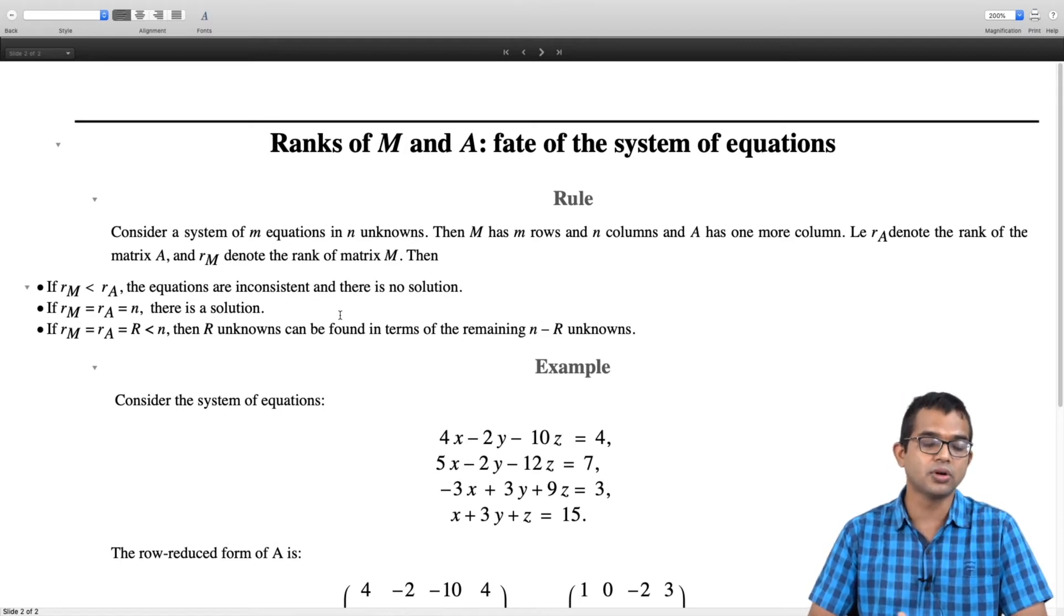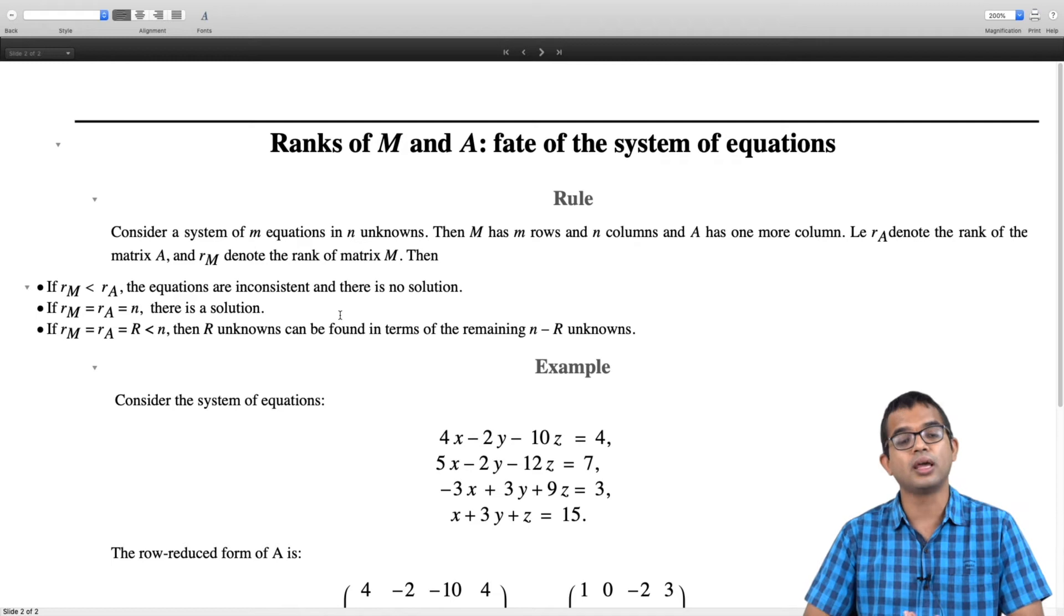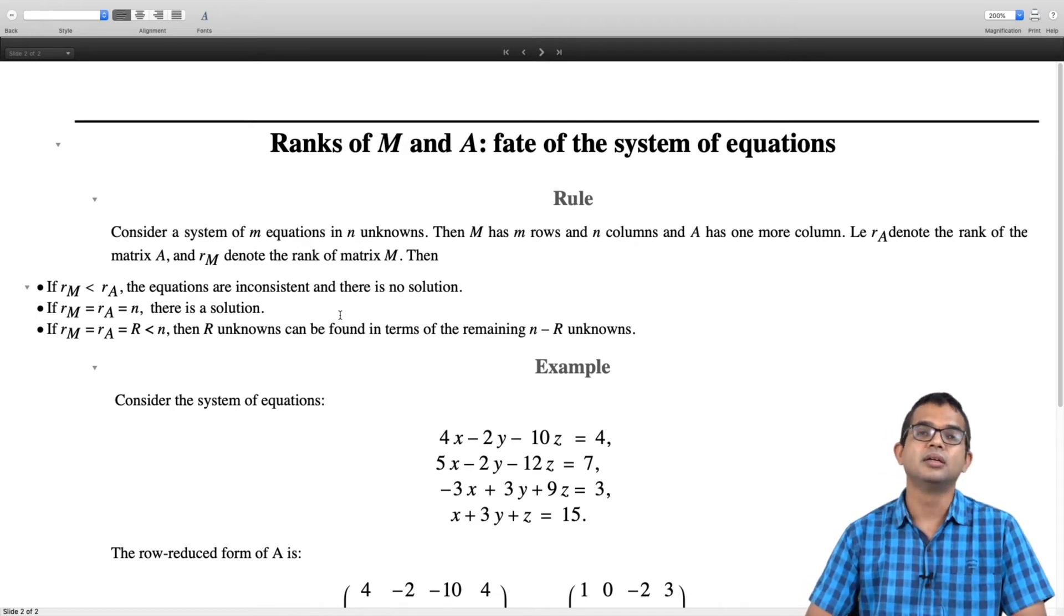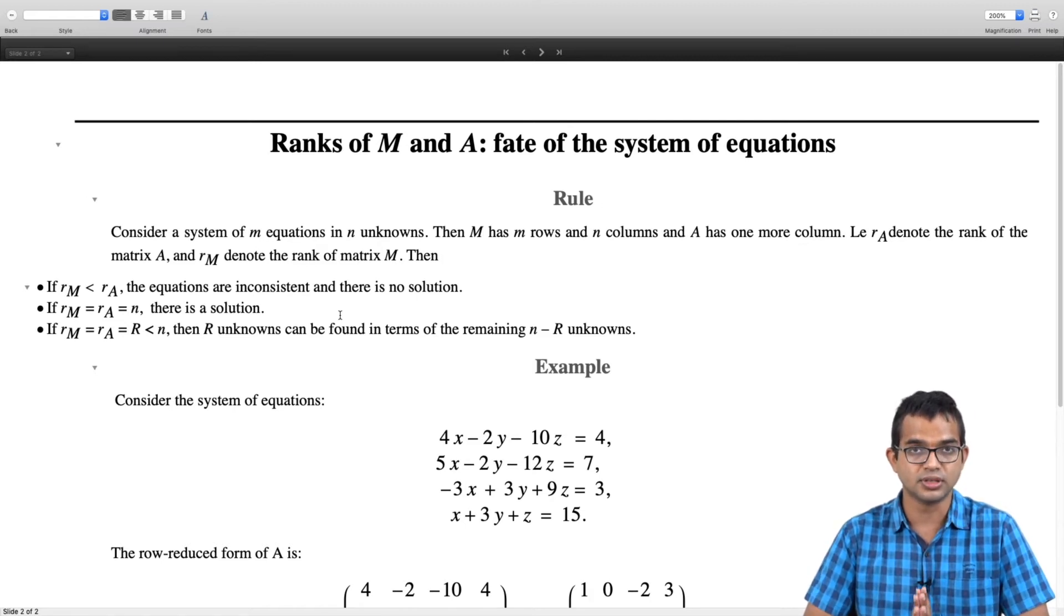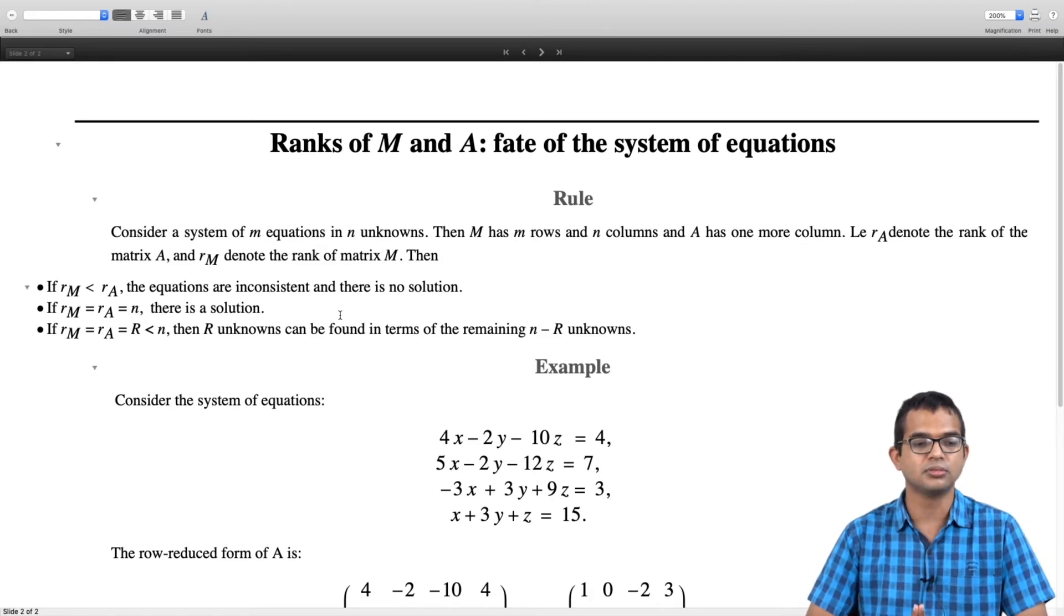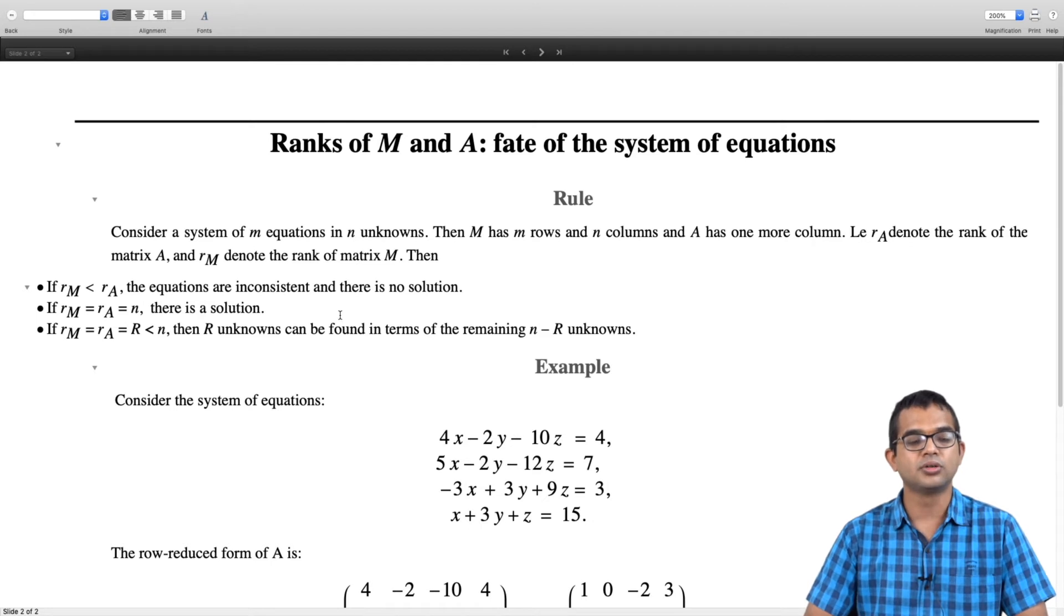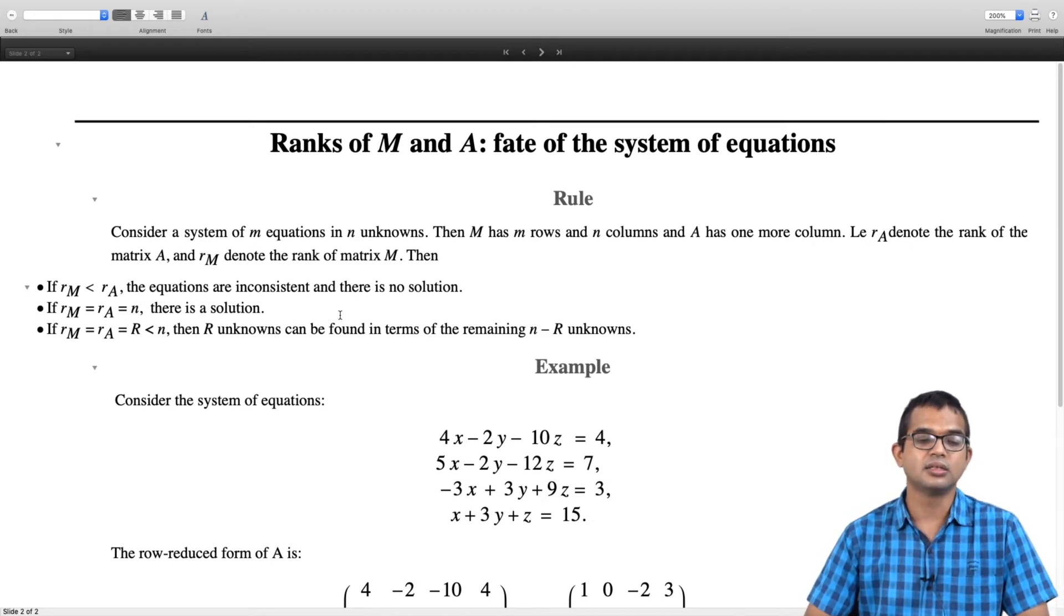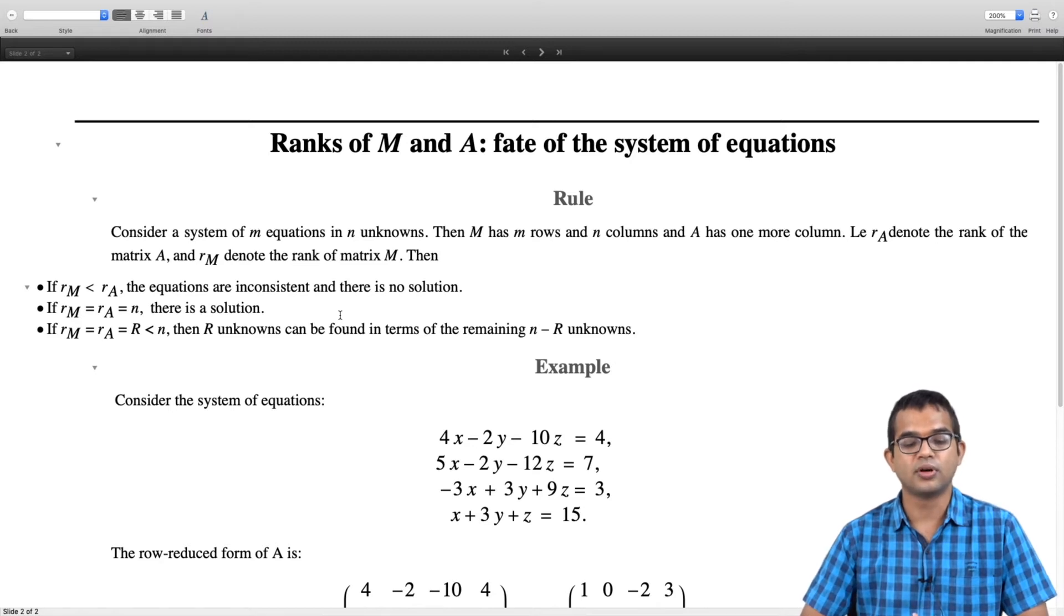Now if rM is equal to rA and also equal to n, the number of unknowns, then not only are they consistent but there is a unique solution. There is just one precise solution. But on the other hand if rM is equal to rA is equal to some r which is less than n, then r unknowns can be found in terms of the remaining n minus r unknowns. So this is the theory.